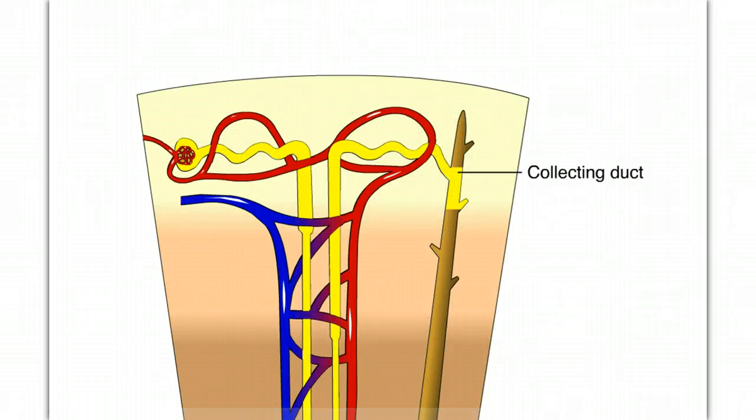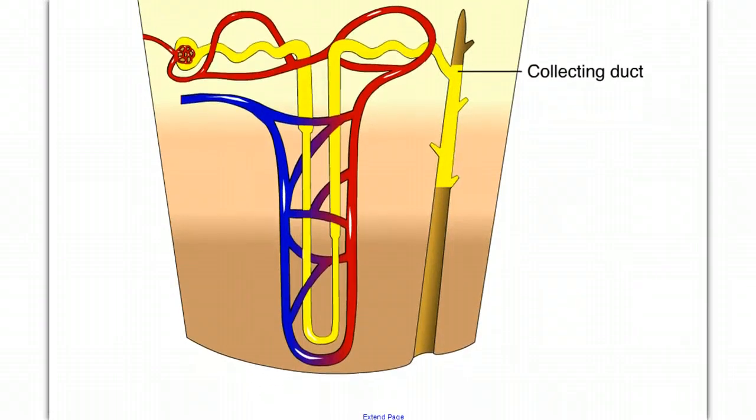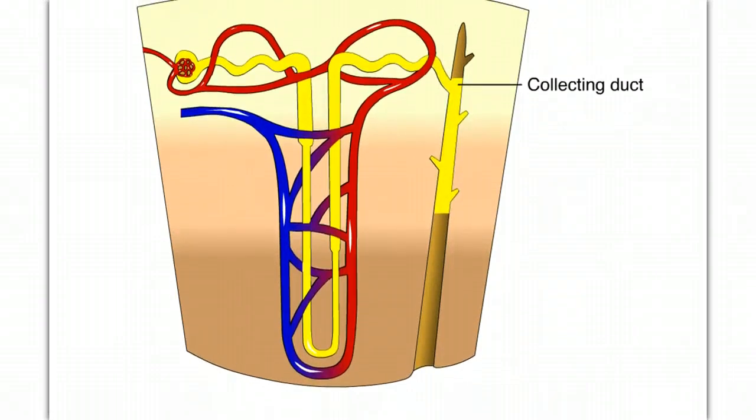The filtrate enters the collecting duct. As it moves down the collecting duct, it passes through a region where the surrounding fluid has a higher and higher solute concentration. Water leaves the collecting duct by osmosis, concentrating the remaining filtrate into urine.